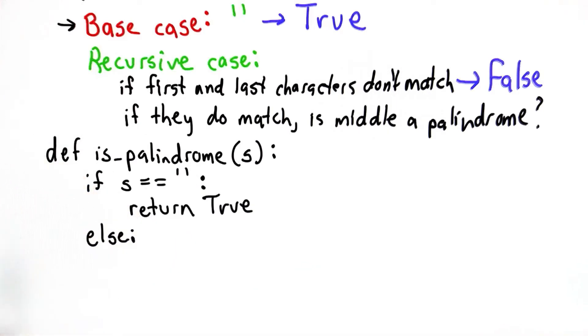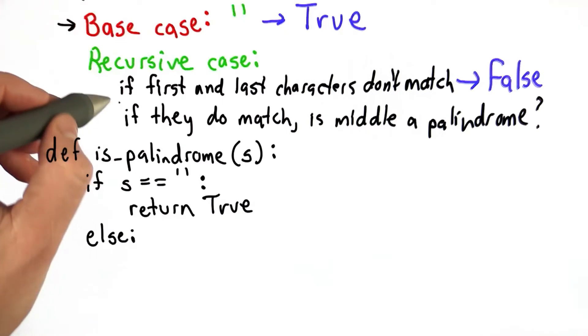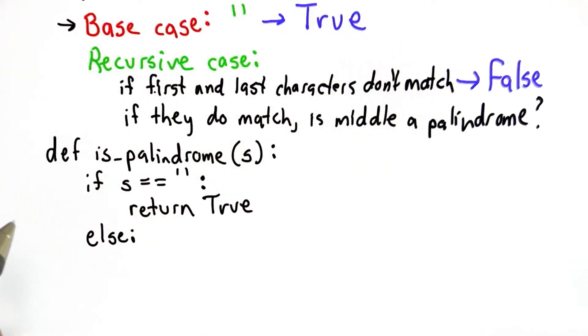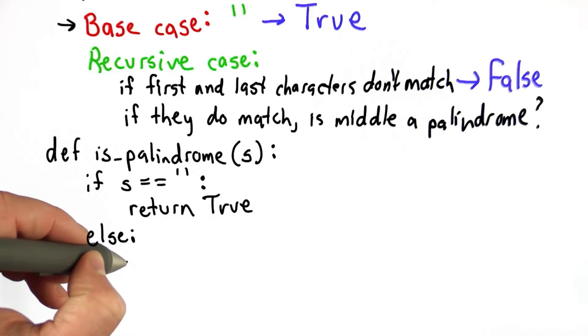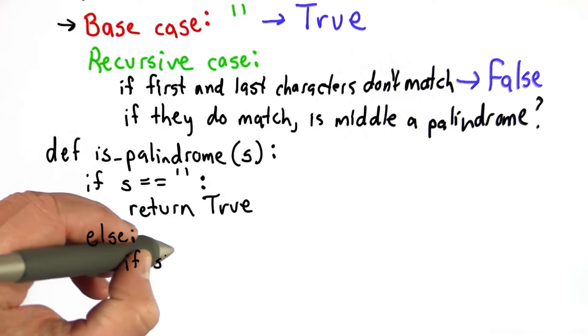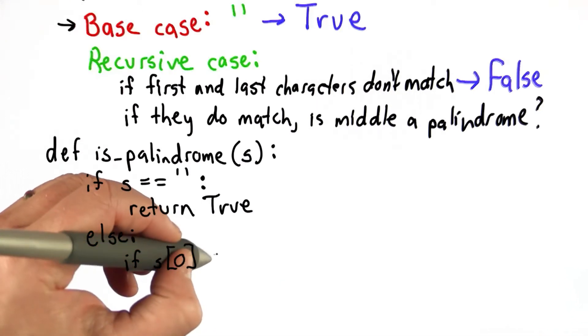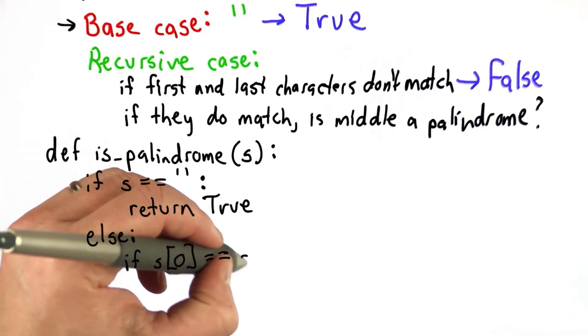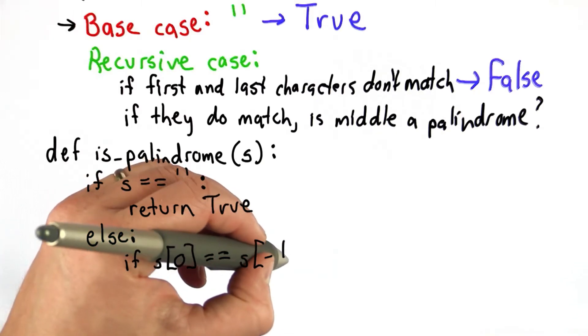For the else, we have the recursive case. Now we need to do the test of the first and the last characters to see if they match. We can do that using the string indexing operators. s[0] gets us the first character. s[-1] gets us the last character.